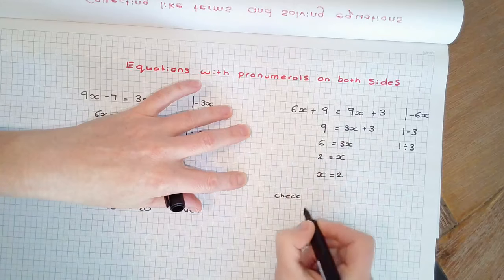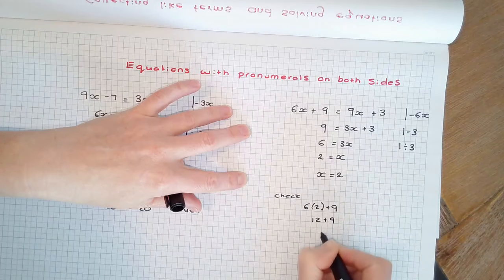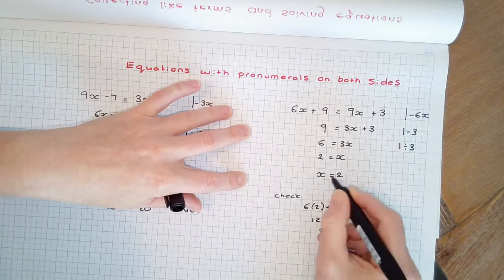substituting it into the left-hand side, I have 6 times 2 plus 9, which is 12 plus 9, which equals 21. And the right-hand side,